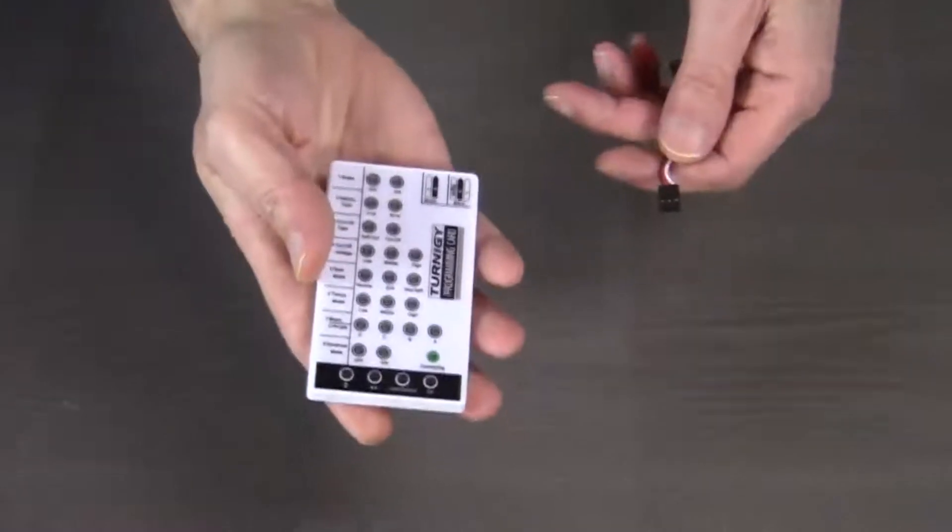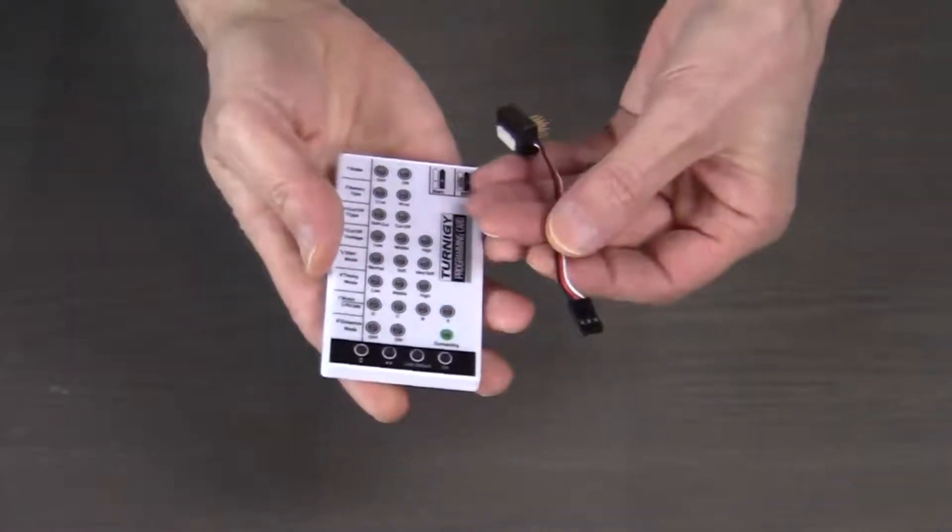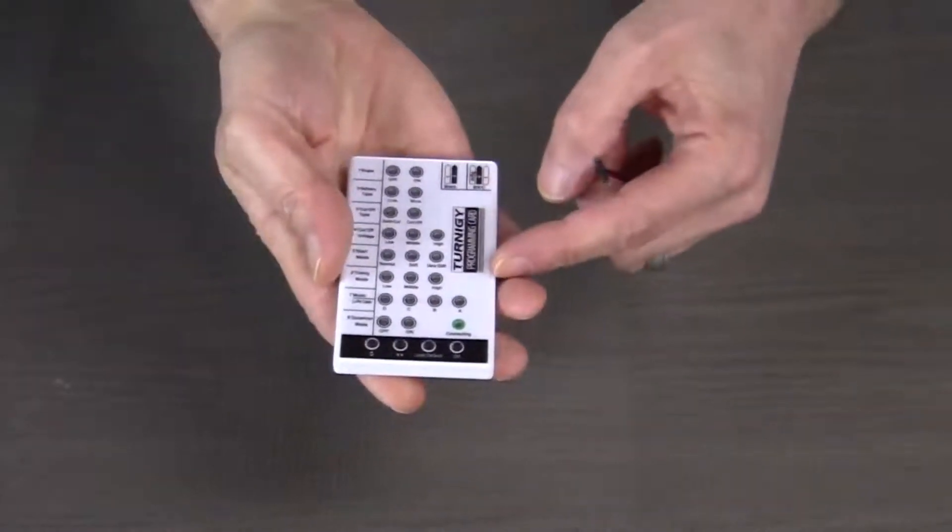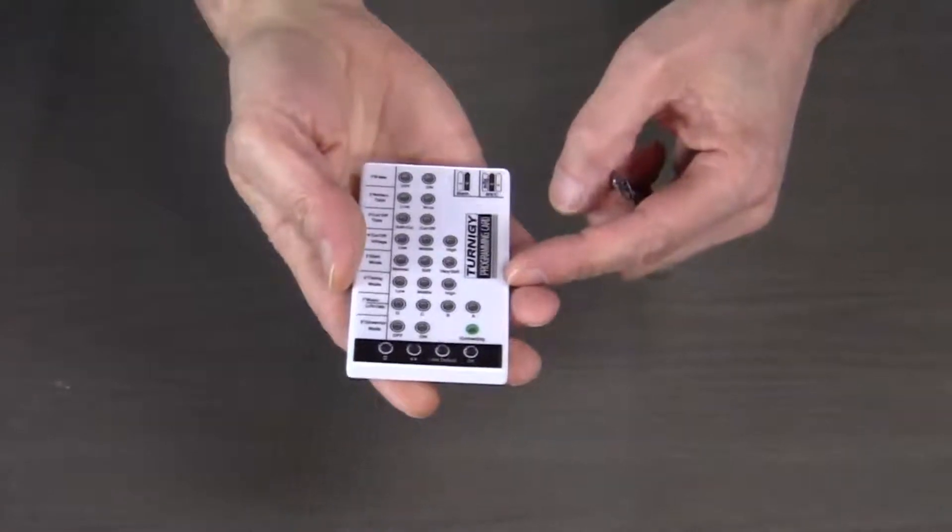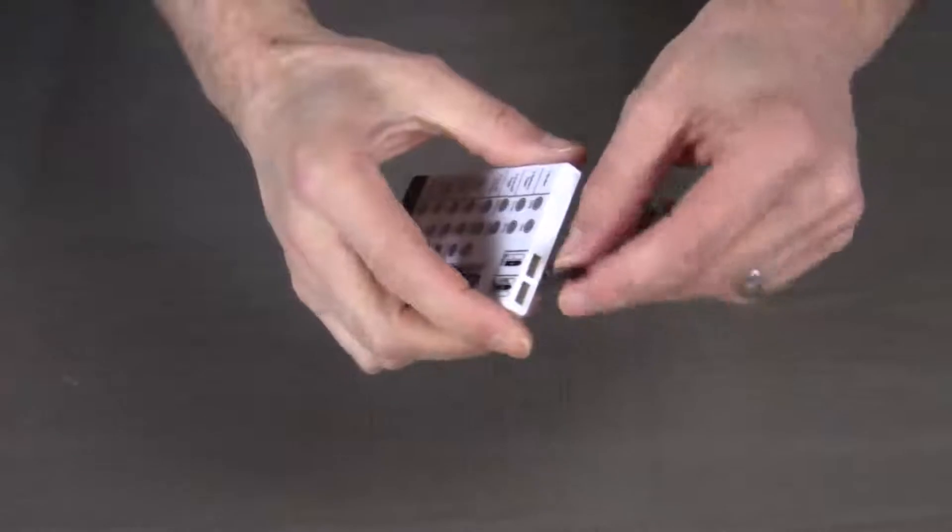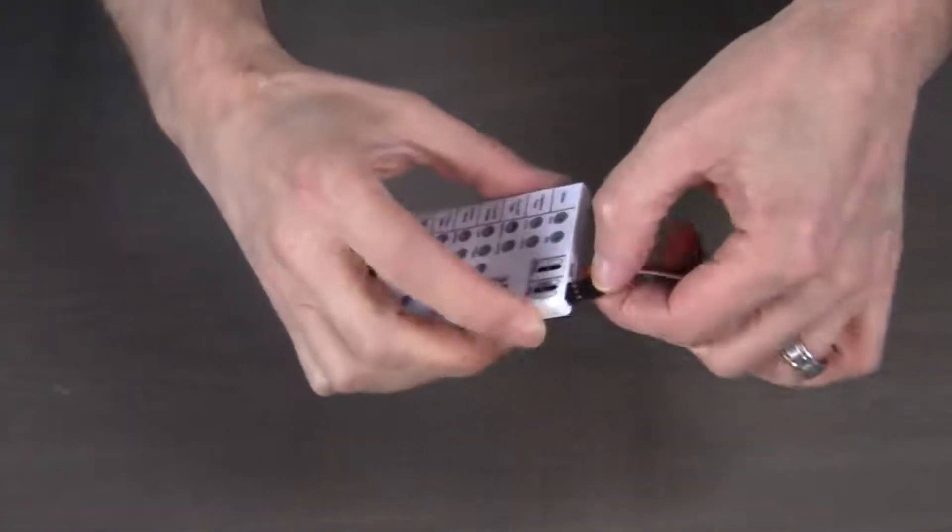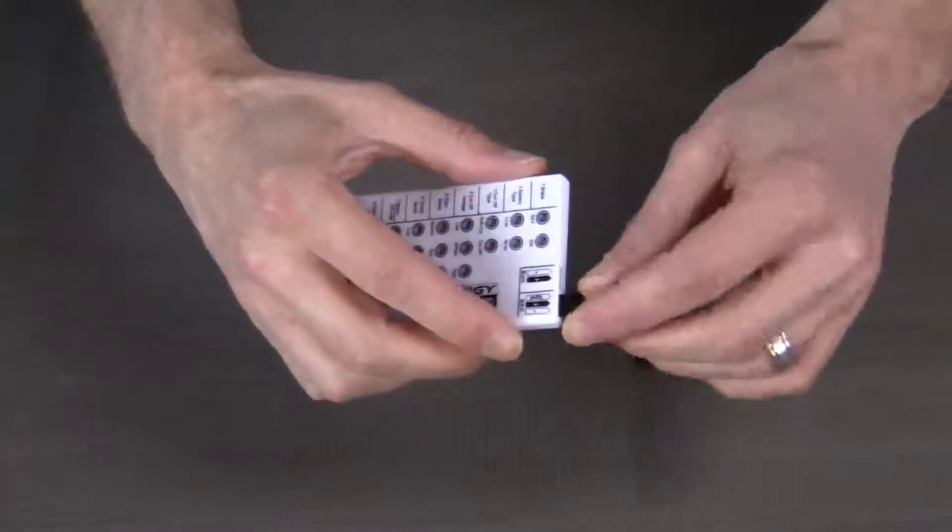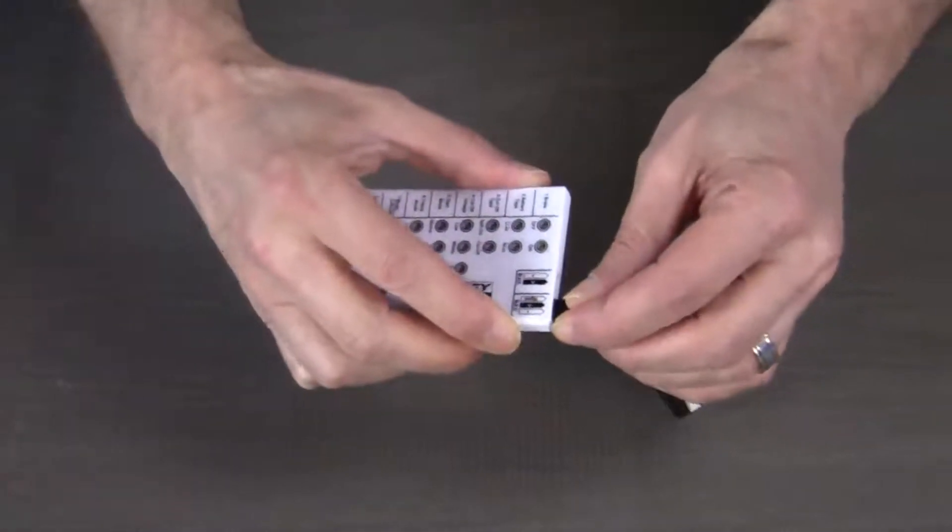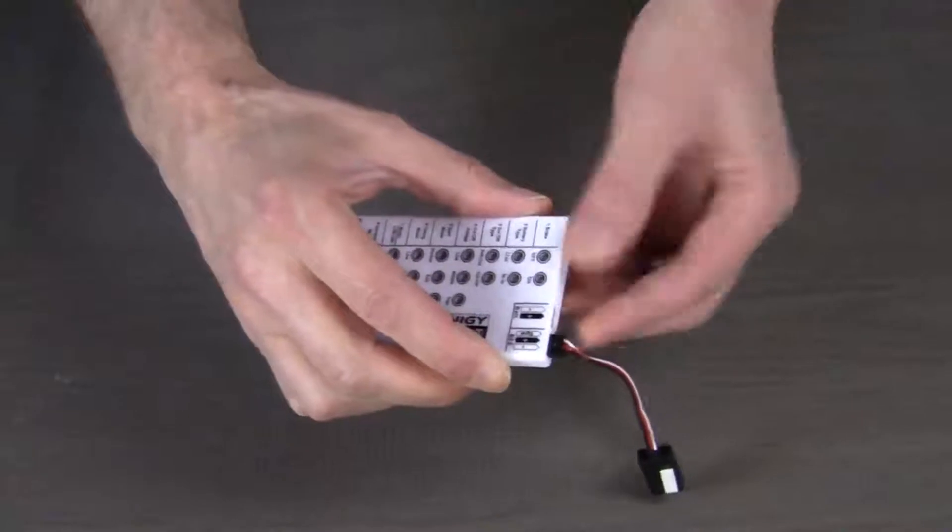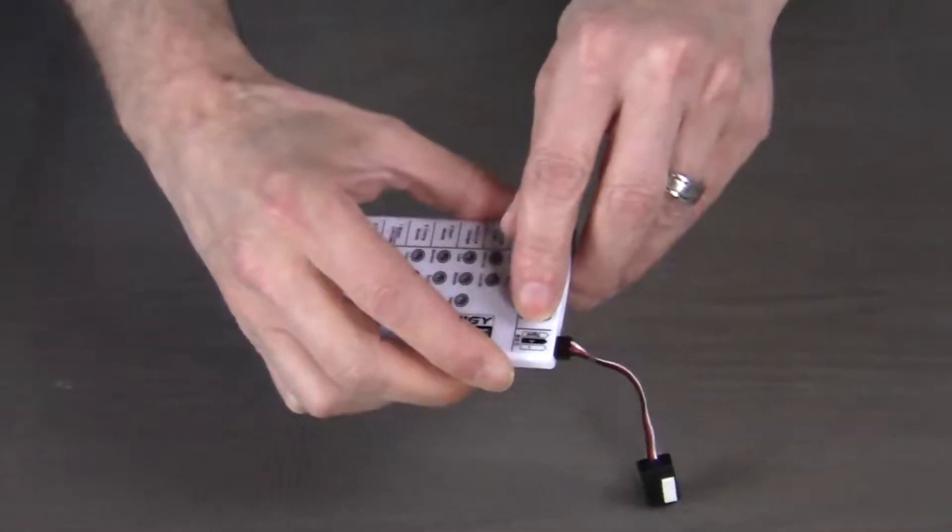The first thing that we need to do is connect the TH hub to the Turnigy programming card. To do that, we simply plug it into the BEC port on the card, making sure that the white wire, which is the signal wire, is on the signal pin.